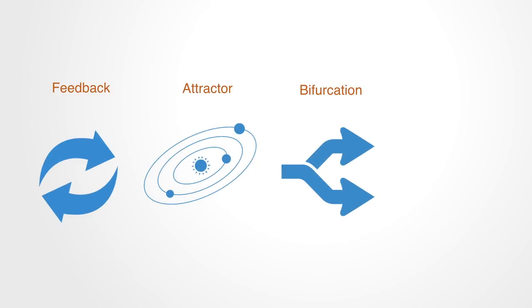The general model is based around feedback loops, attractors, bifurcations, phase transitions, self-organization, and emergence. By understanding this process, we can better use it towards enabling organizational change.